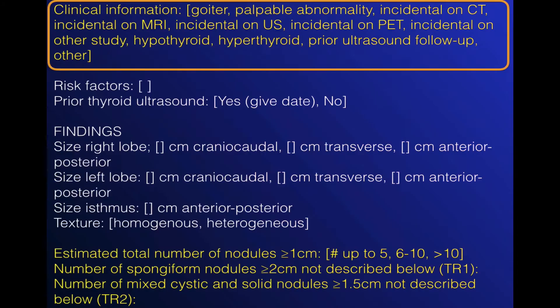First, let's take a look at thyroid ultrasound. The report starts off with clinical information — the reason the patient had the ultrasound — and this is a pick list option. Next we've got risk factors, prior ultrasound, and a general size and texture of the thyroid. The white font is optional but makes a complete radiology report; it's the yellow font that is really important for the study. The last part of this early section has three lines on nodule numbers. The first line is the estimated number of nodules measuring one centimeter or greater — you can count up to five, then just give ranges. This is for all nodules of any composition, whether or not you've reported them in detail below.